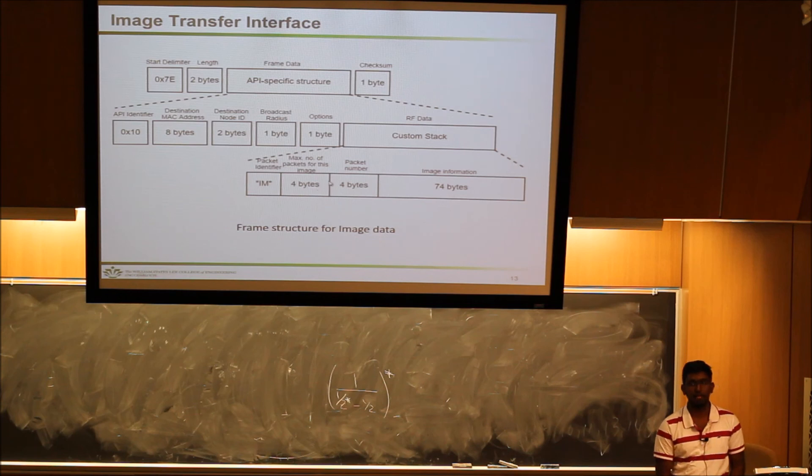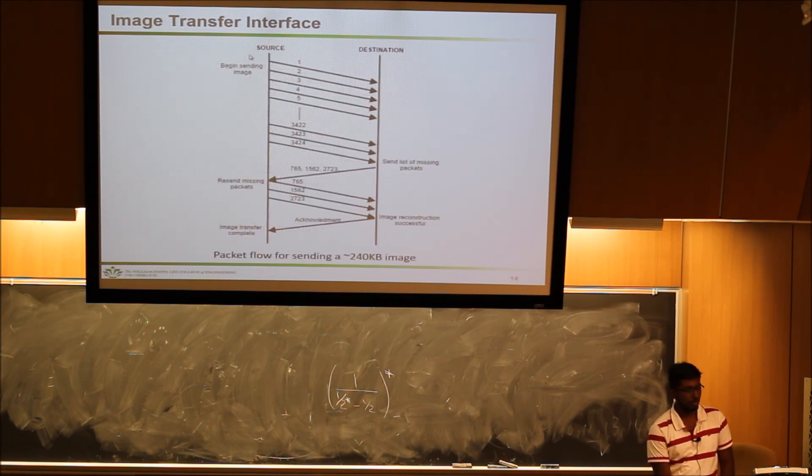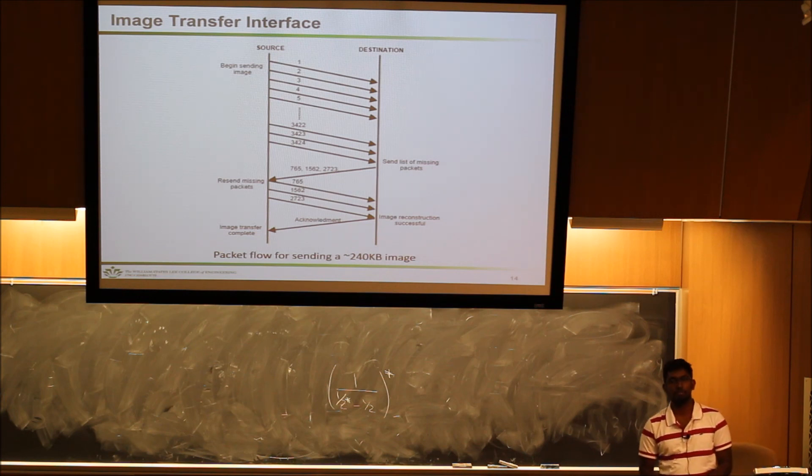The next four bytes are the maximum number of packets the destination would expect for this one image. The next four bytes are this packet's number in that sequence, and we have 74 bytes of image information. The source sends all these packets in sequence one after the other. When the destination node receives the final packet, it creates a list of all the packets that were missing and sends back these missing packets to the source.